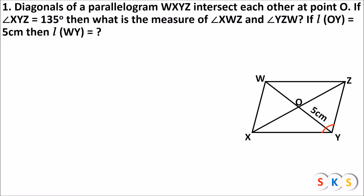Question number one. Diagonals of parallelogram WXYZ intersect each other at point O. If angle XYZ equals 135 degrees, then what is the measure of angle XWZ, angle YZW, and if OY equals 5 centimeters, then what is the length of WY? Let's see the solution of this question.